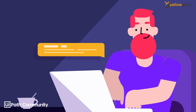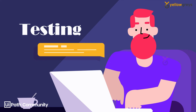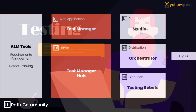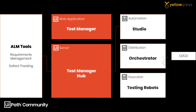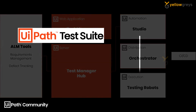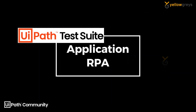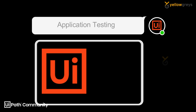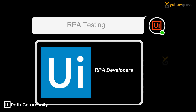Earlier we did unit testing and process testing manually through the design workflow, which made it quite difficult for testers to complete the testing within the turnaround time. UiPath came up with Test Suite packages, which is for application testing and RPA testing.